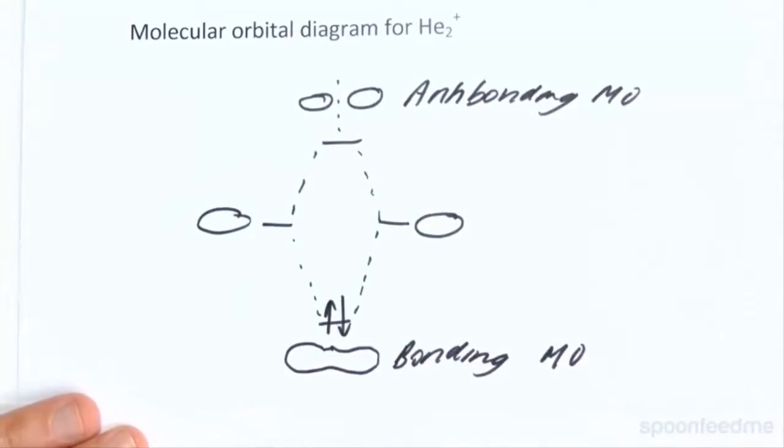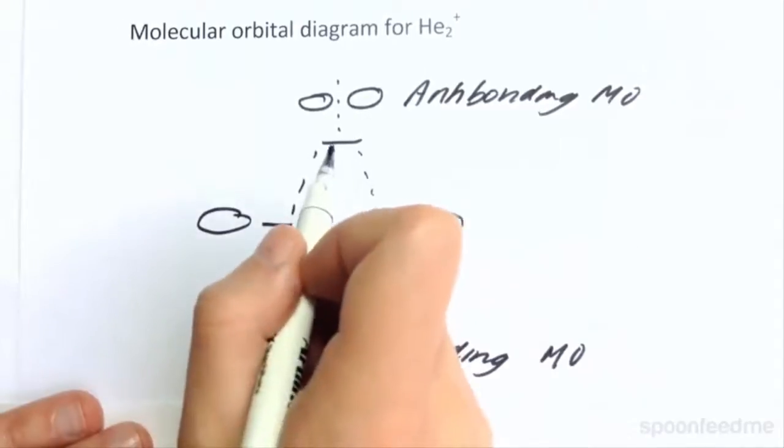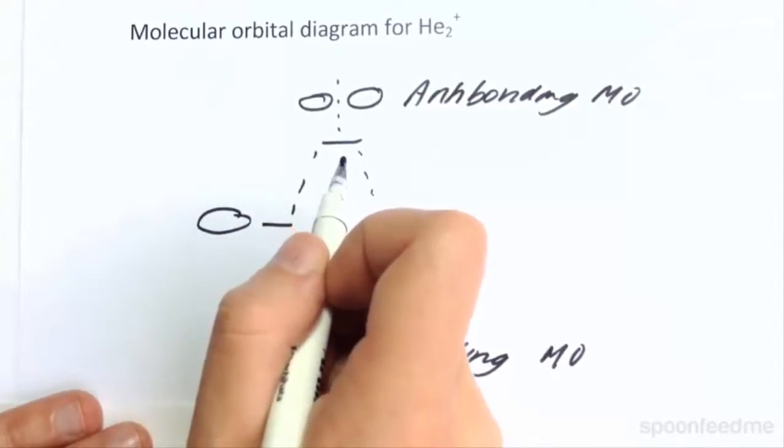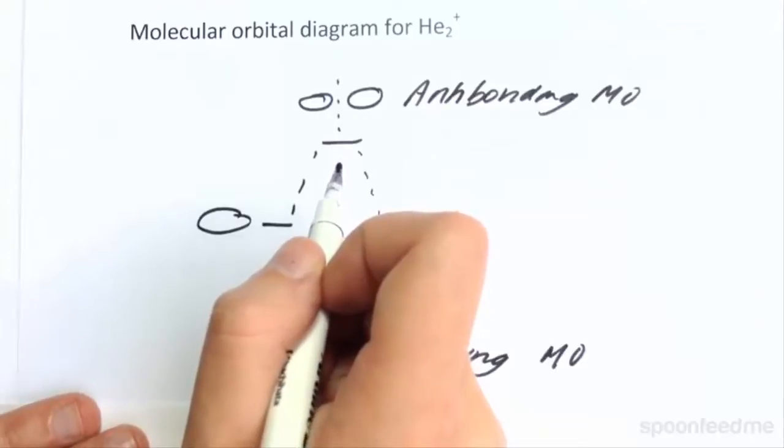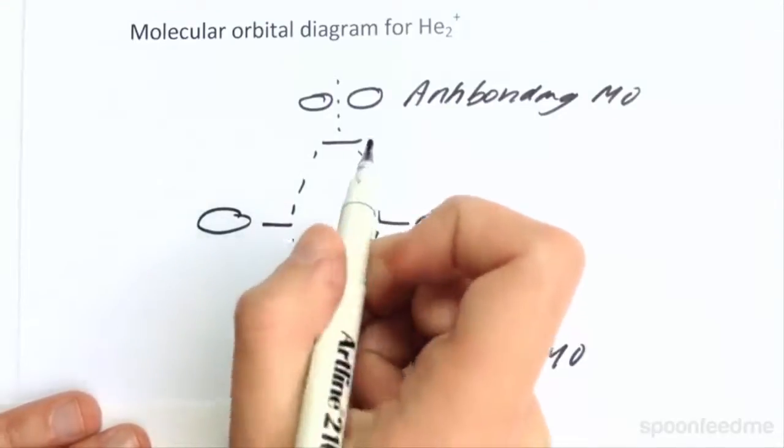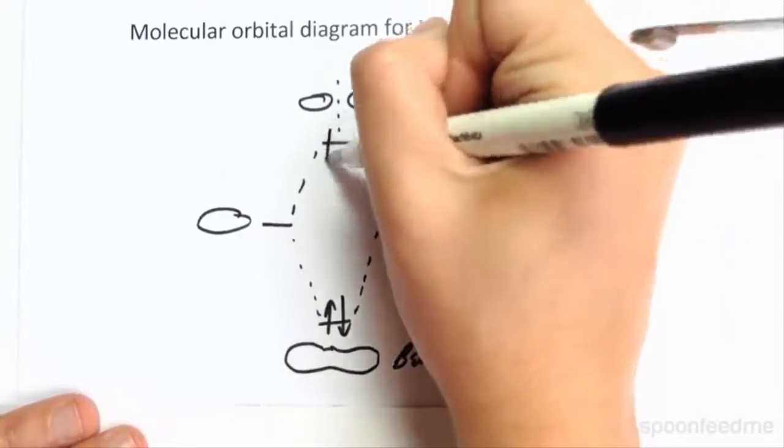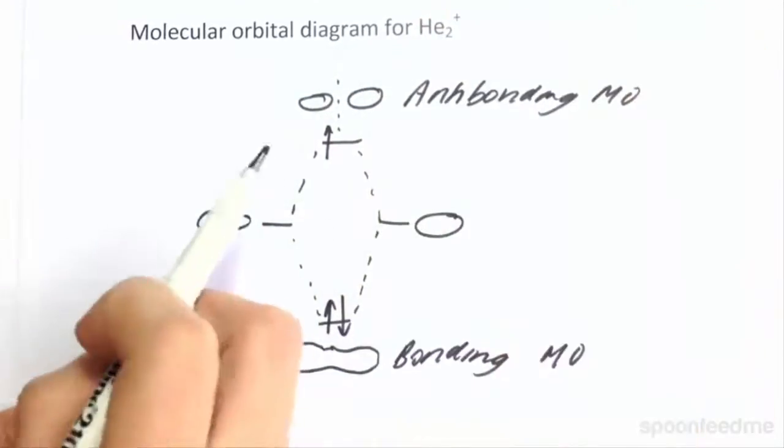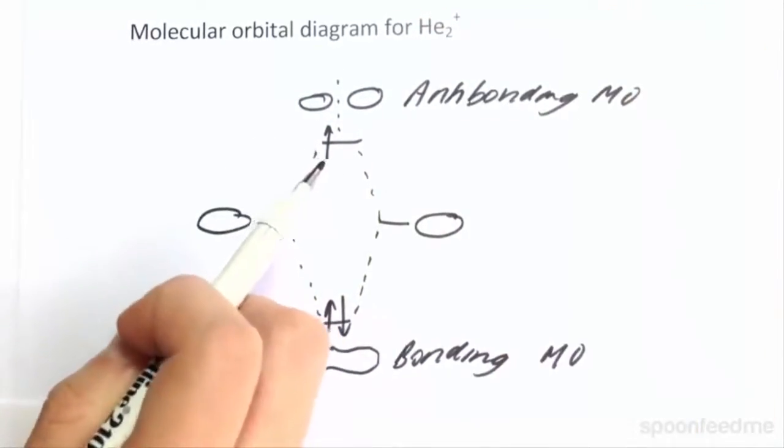The third electron will therefore go into the next lowest energy molecular orbital. We can see what this is clear from our diagram. It's going to be the antibonding molecular orbital. We can also have two electrons in this orbital, just as in the bonding molecular orbital. We'll put the third electron up there with an up-facing arrow. This is where our third electron goes, the next lowest energy level.